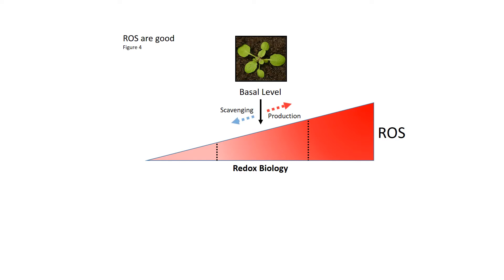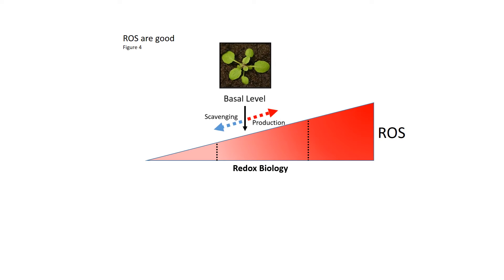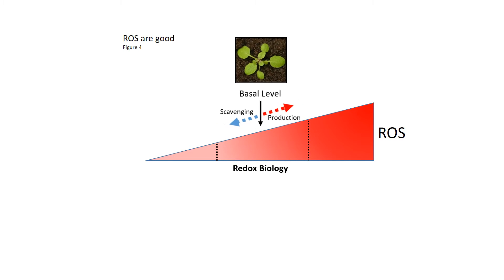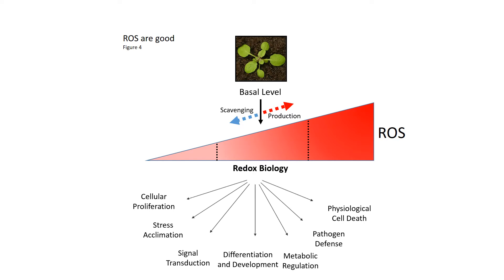The level of reactive oxygen species is determined in cells by an interplay between ROS scavenging and ROS production. This allows ROS to be maintained in a certain range, preferably the redox biology range, and that will allow cells to actually control many, many different processes.